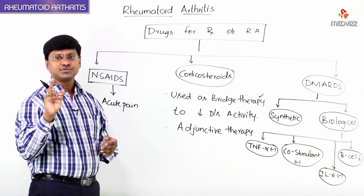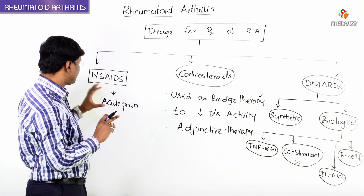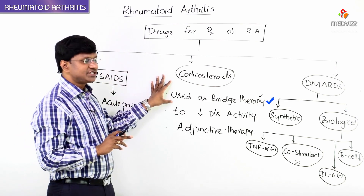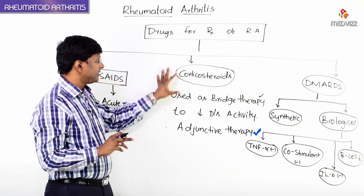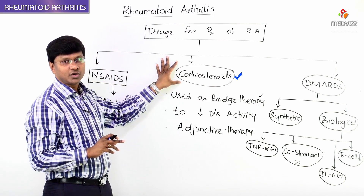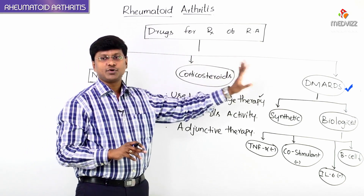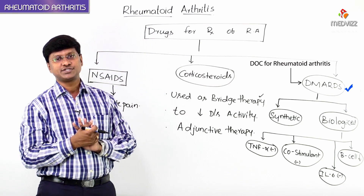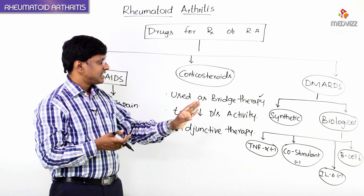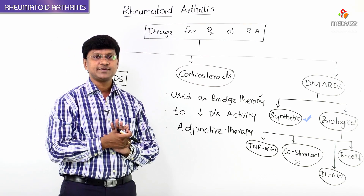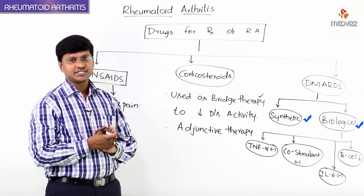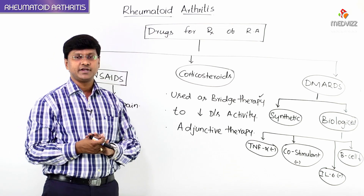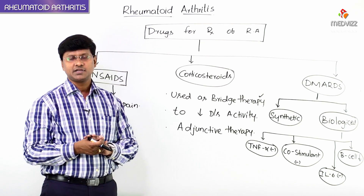Overall, the drugs used in treatment of rheumatoid arthritis: for acute pain we use NSAIDs; for bridge therapy and adjuvant therapy we give corticosteroids; and the disease modifying anti-rheumatic drugs are the drug of choice, with two types — synthetic and biological DMARDs. Now let me explain each and every drug in this particular class.